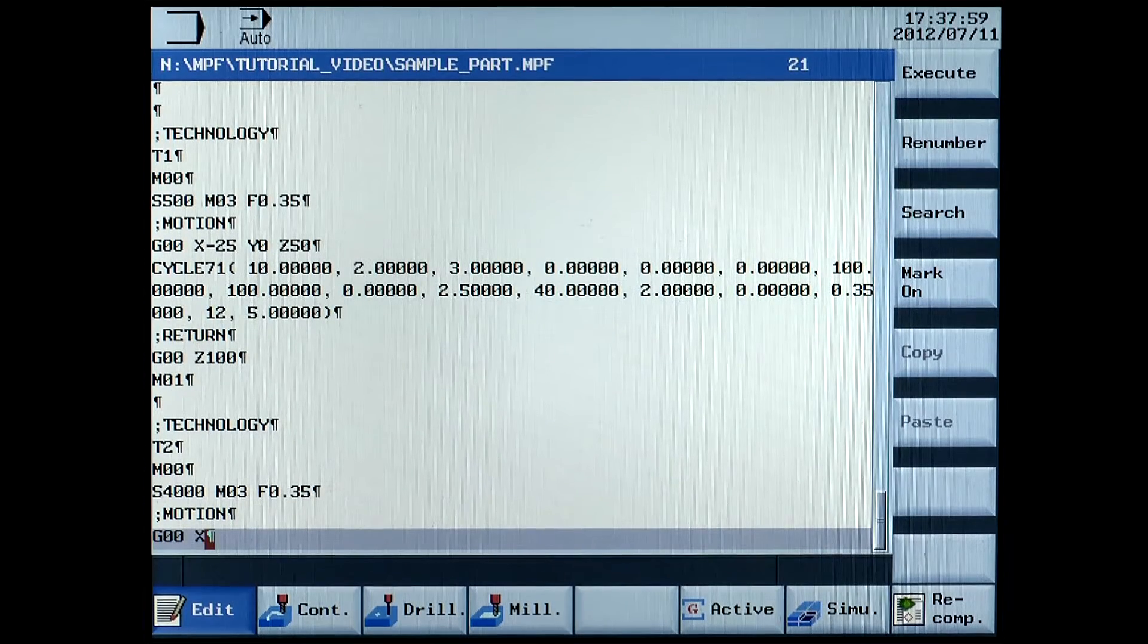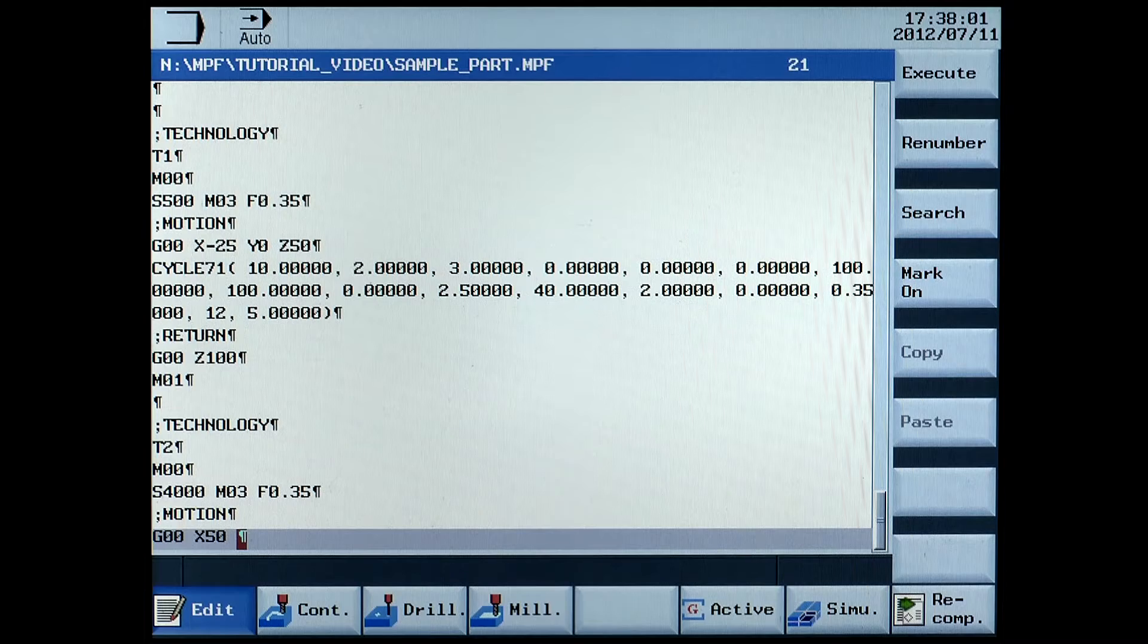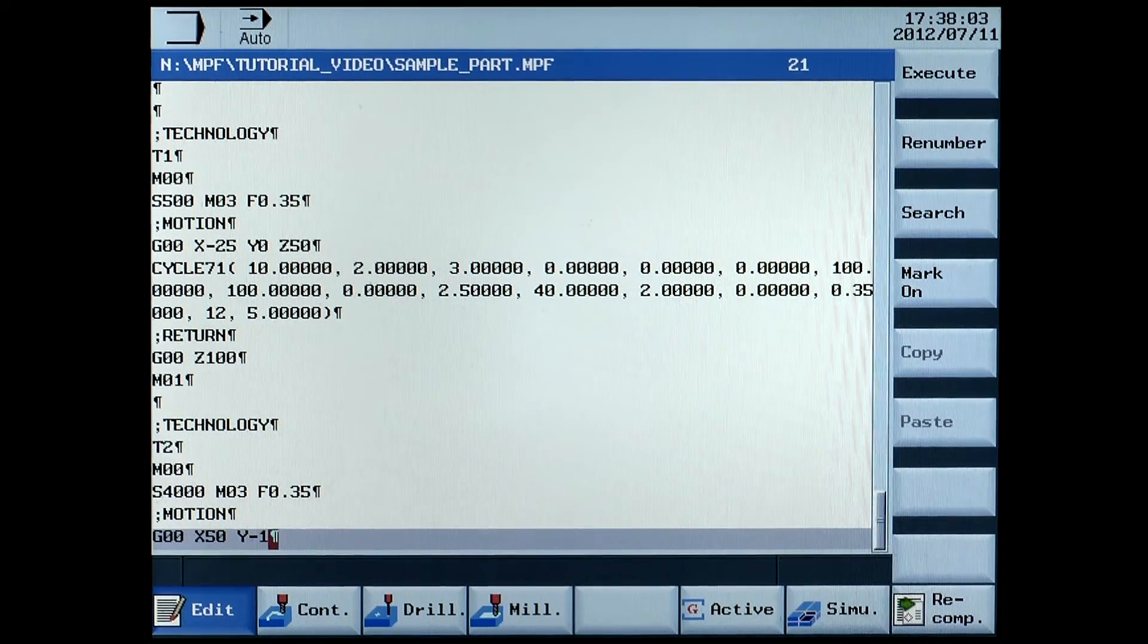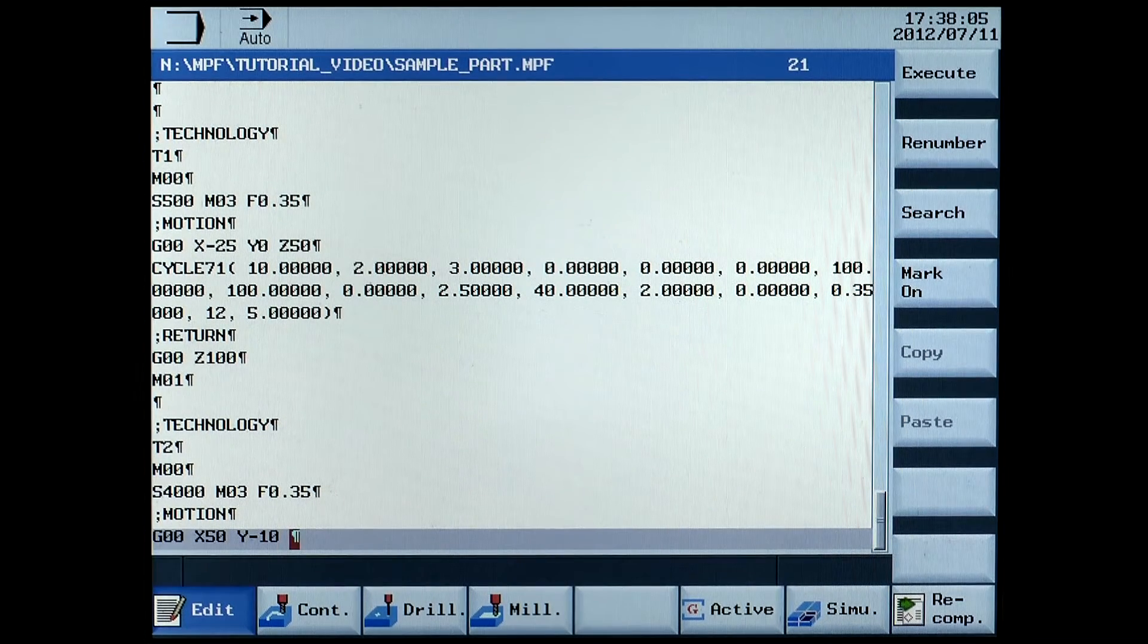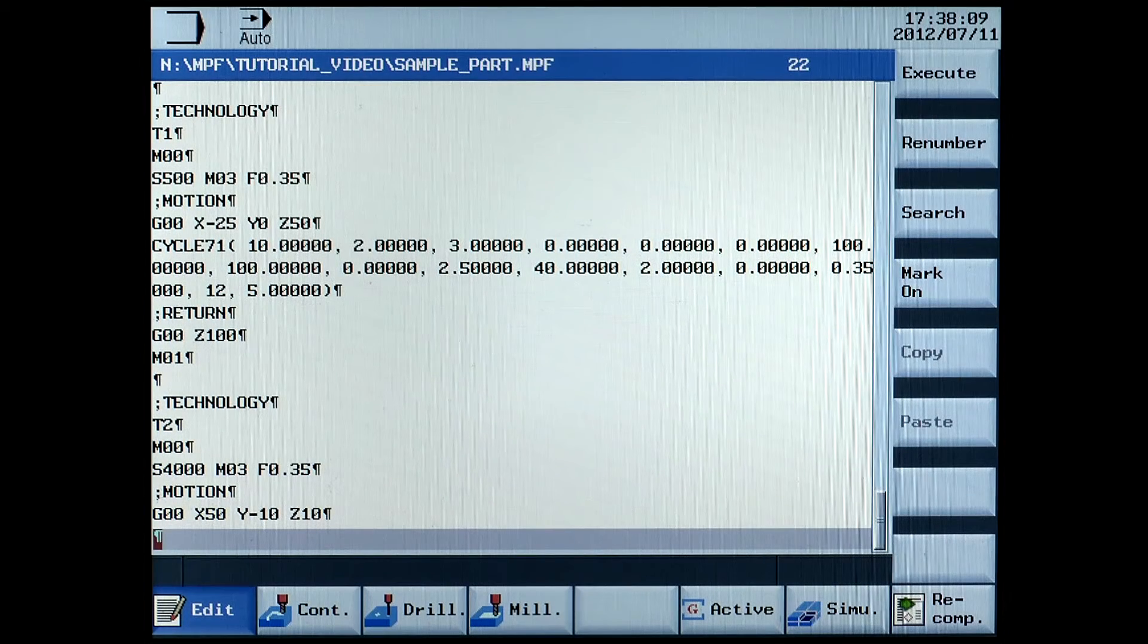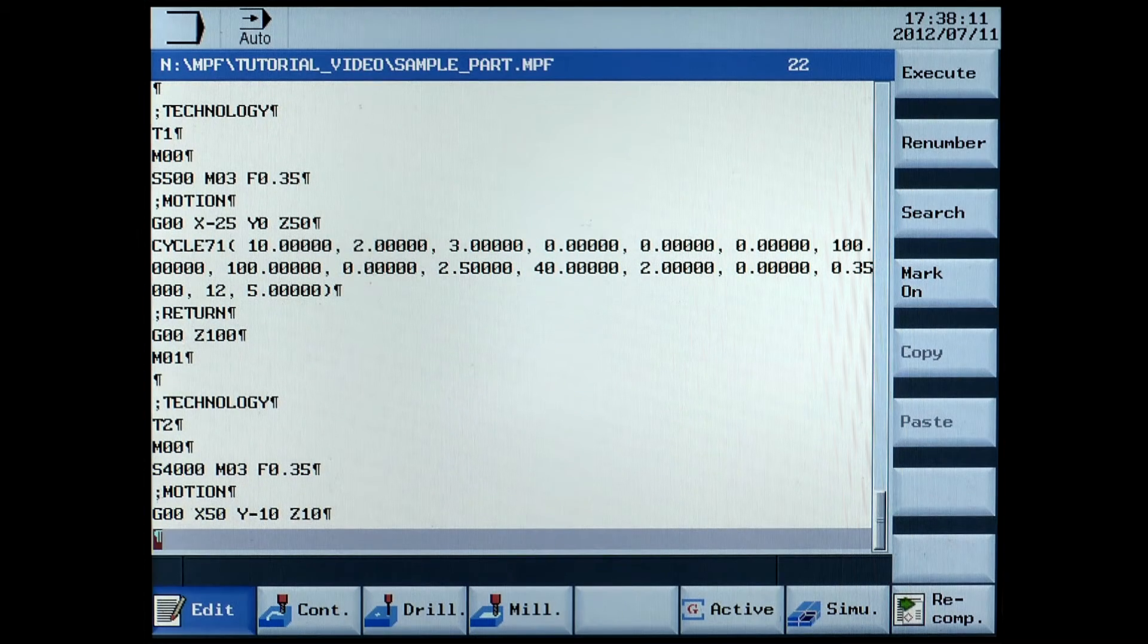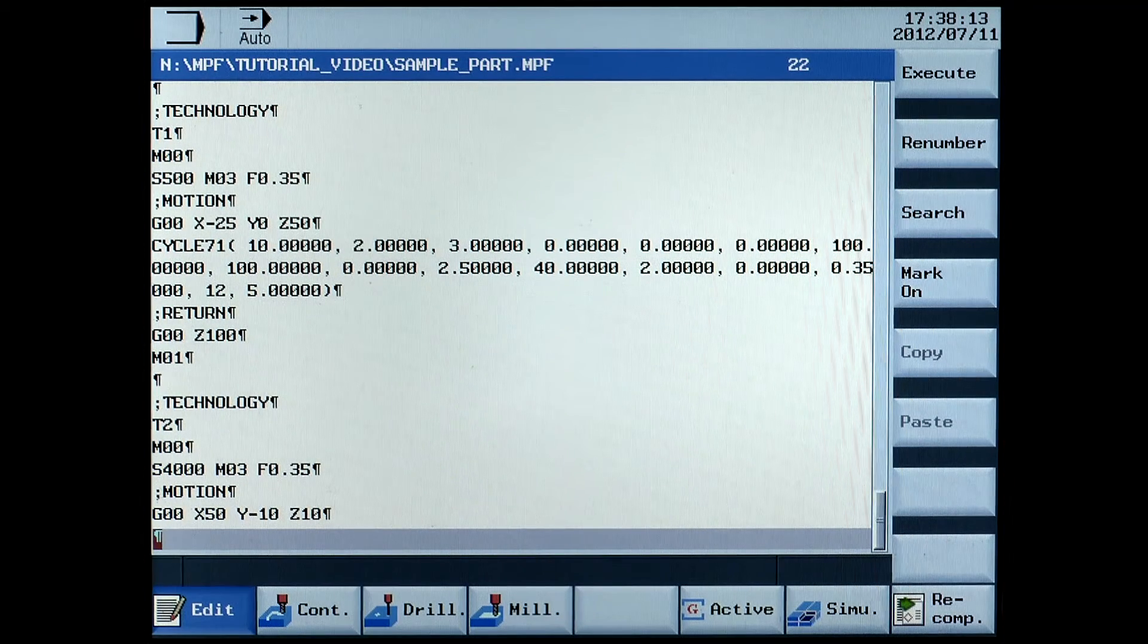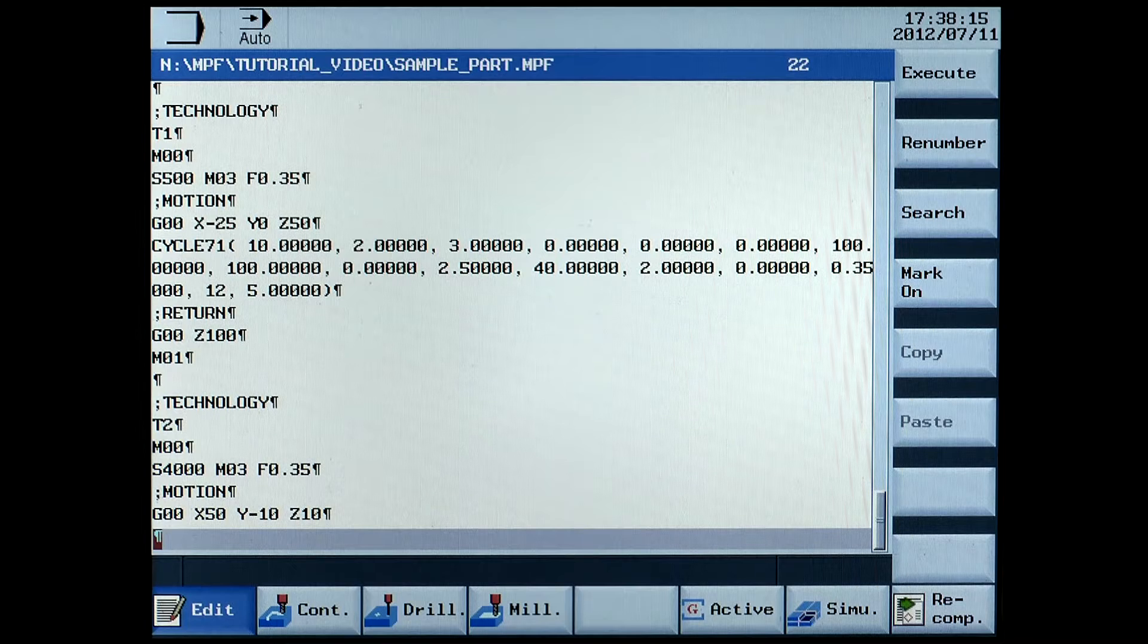G00, X50, Y-10, Z10. At first we are roughing the contour. This will be defined with the parameters at cycle 72.